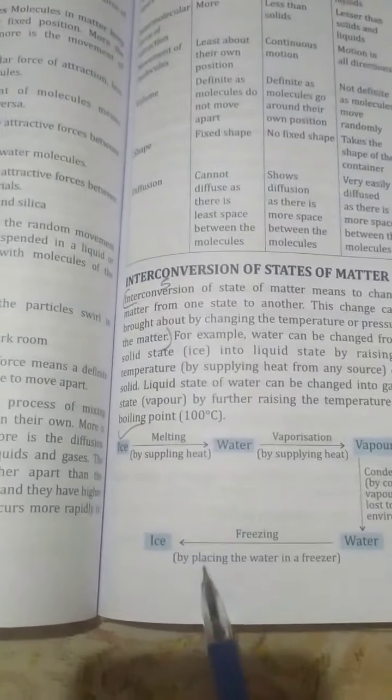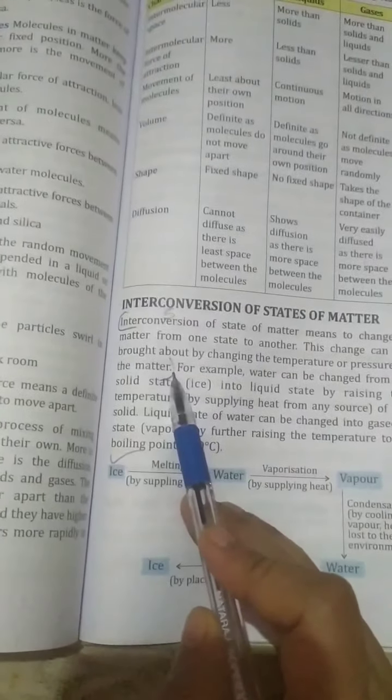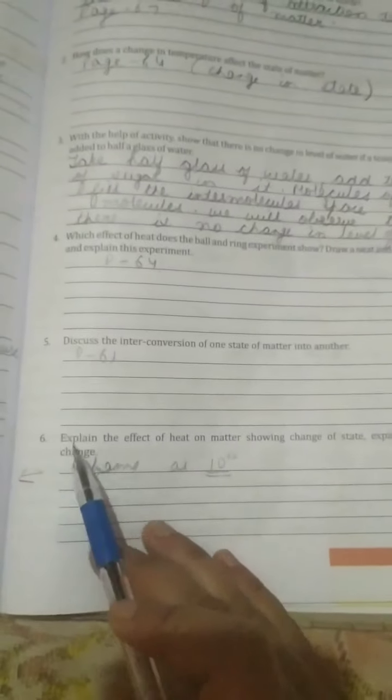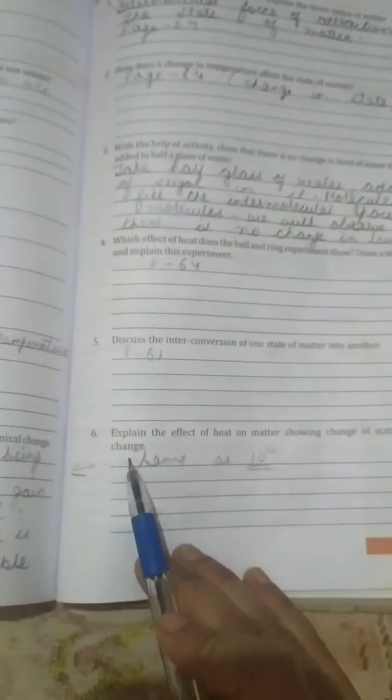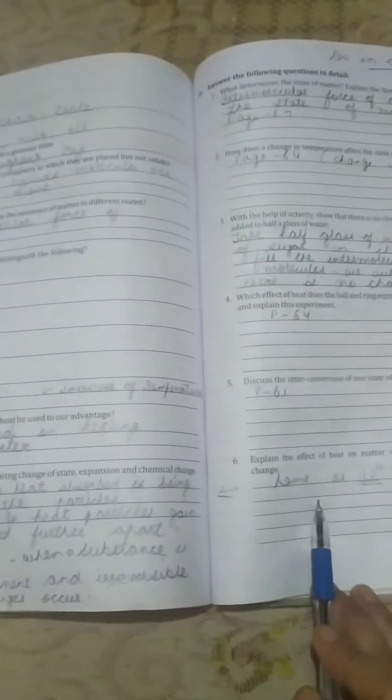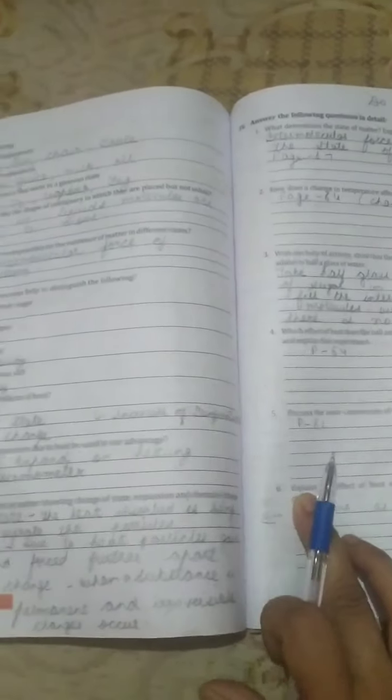Next question: explain the effect of heat on matter showing change of state, expansion, and chemical change. Both these questions are the same, so this answer is required for this much. No need to write question number six because in question number ten you have already written the same answer.